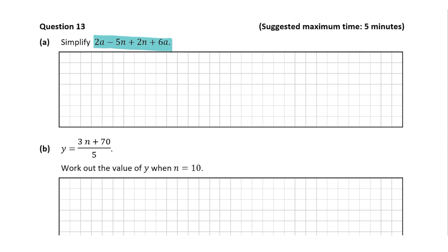So 2a minus 5n, we can't do that because they're two different terms. Now we can add 2a plus 6a and minus 5n plus 2n because they are like terms. So let's put the two like terms together. So 2a plus 6a, and then we have minus 5n plus 2n. So you can just see here we've rearranged the expression.